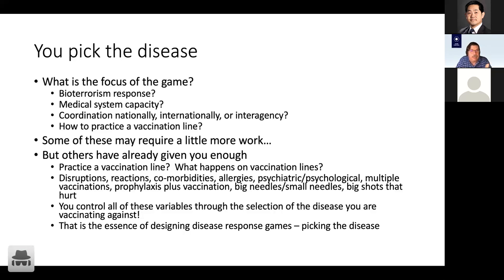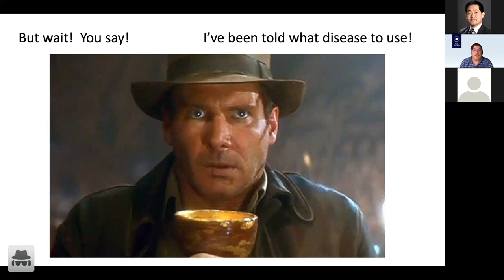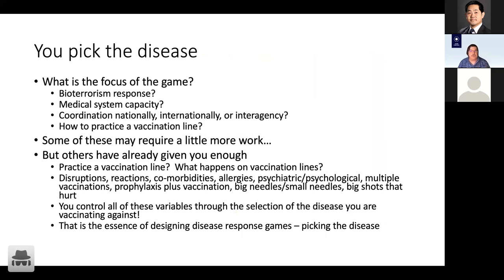You can control variables through the selection of disease. For example, you want disruptions on your vaccination line — people coming in screaming and yelling — so you want something fairly egregious to get people to react. On the other hand, if you want something that triggers allergies, you might want an egg-based vaccine or a vaccine with high allergenic capability. But sometimes you get told what disease to use, in which case you don't get to pick — someone else is in charge.